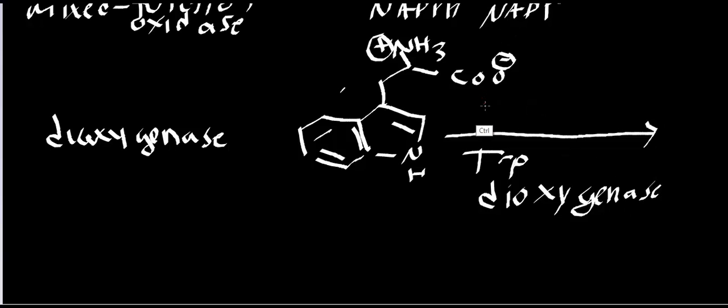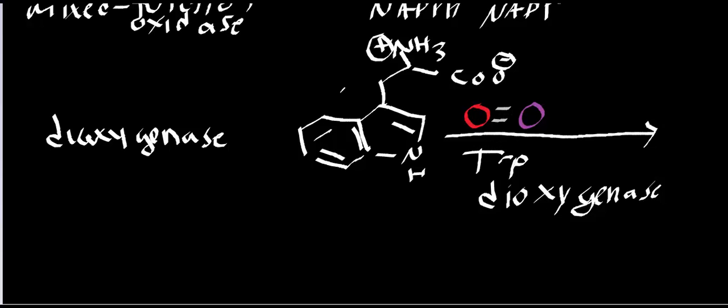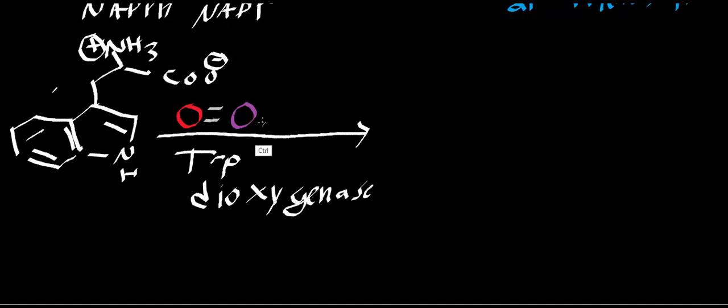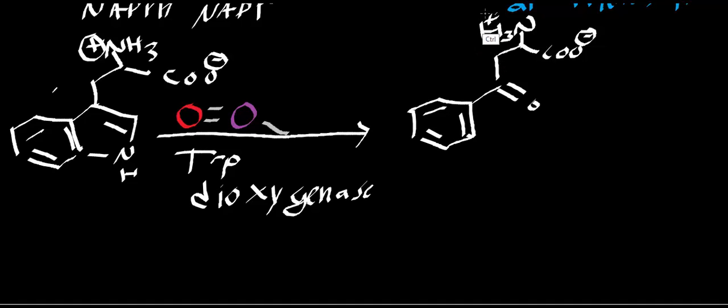Now, I'm going to do the same thing we did before. So I'm going to have my oxygen molecule. I've got them in different colors. And what you're going to find with dioxygenases is that both oxygen atoms get incorporated into the molecule. So what I'm going to end up with is something that looks like this. And this molecule has a special name, and it's called N-formylkynurenine.